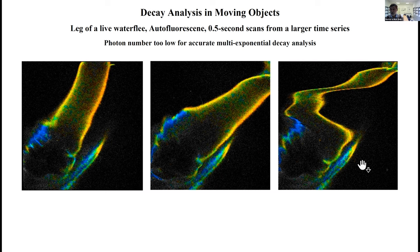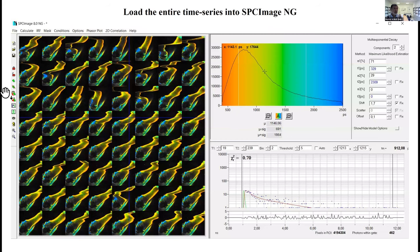Because we recorded only for 0.5 seconds, the photon number is terribly low. You see this kind of image contains a lot of noise. Okay, combination with the phasor plot. We load all the little images from the entire time series into SPCImage.